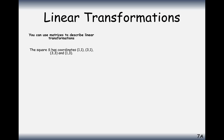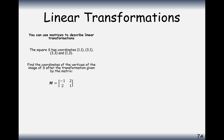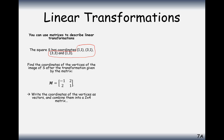Now with these transformation matrices we can transform a set of coordinates. The question asks us to find the coordinates of the vertices of image S after transformation by the matrix (minus 1, 2 / 2, 1). We multiply two matrices together: the transformation matrix goes at the front, and the coordinates form the second matrix. The coordinates go in vertically as columns — the coordinate (1,1) goes in the first column, (3,1) in the second, (3,3) in the third, and (1,3) in the fourth.